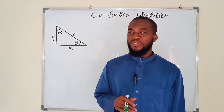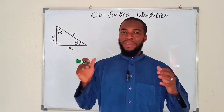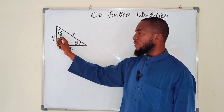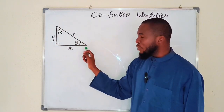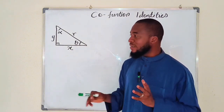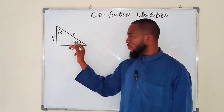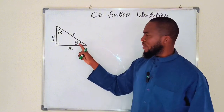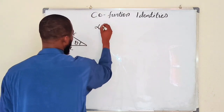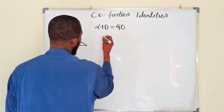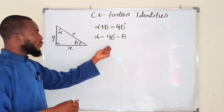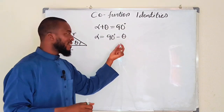Hello, good day viewers. In this tutorial we are going to derive other important identities from complementary angles, known as co-function identities. We have a right angle triangle with angles alpha and theta. These two angles are complementary because they add up to 90 degrees. Since the sum of all interior angles of a triangle equals 180 degrees, and one angle is already 90 degrees, these two must sum to 90 degrees. So alpha equals 90 degrees minus theta.